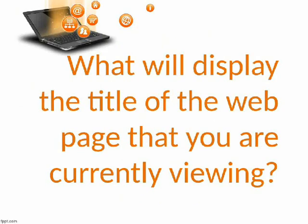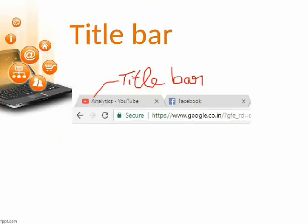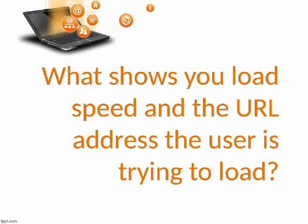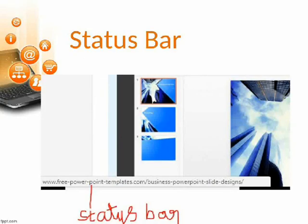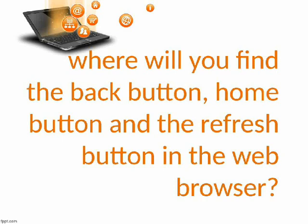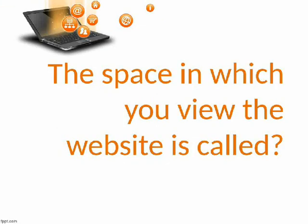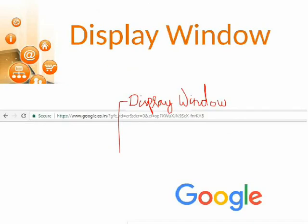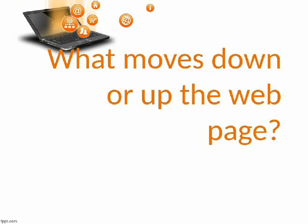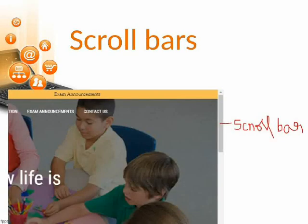What will display the title of the web page that you are currently viewing? Title Bar. What shows you load speed and the URL address the user is trying to load? Status Bar. Where will you find the Back Button, Home Button, and the Refresh Button in the web browser? Toolbar Icons. The space in which you view the website is called Display Window. What moves down or up the web page? Scroll Bars.